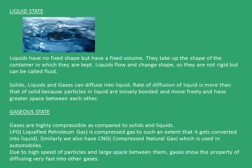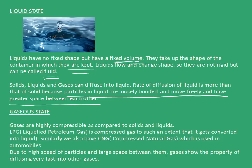The second one is the liquid state. Liquids have no fixed shape but have fixed volume; they take up the shape of the container in which they are kept. Liquids flow and change shape, so they are not rigid but are called fluid. Solids, liquids, and gases can all diffuse in liquid. The rate of diffusion of liquid is more than that of solid, because particles in liquid are loosely bound, move freely, and have greater space between each other.